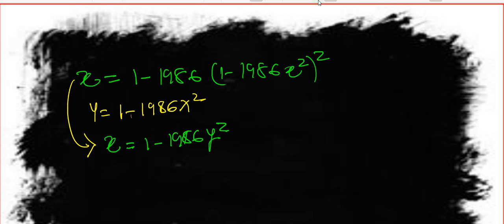I'm going to say y is equal to the part inside: y equals 1 minus 1986 X squared. Now if I replace this in the original equation, instead of writing the full expression I'll write y. So this will turn into: X equals 1 minus 1986 y squared. Let's call this our first equation and this our second equation.